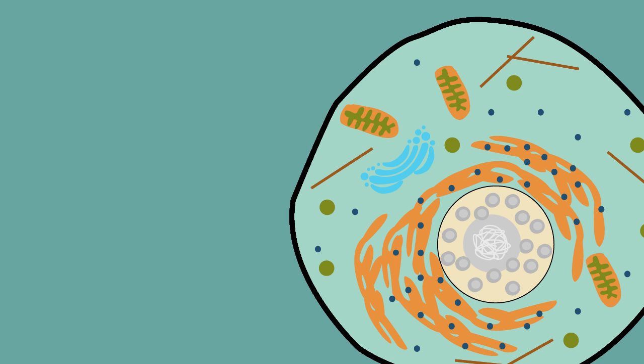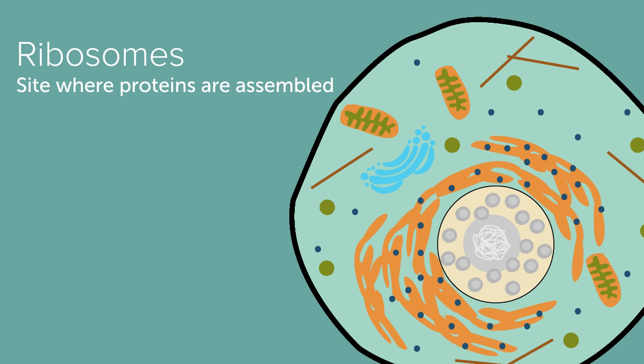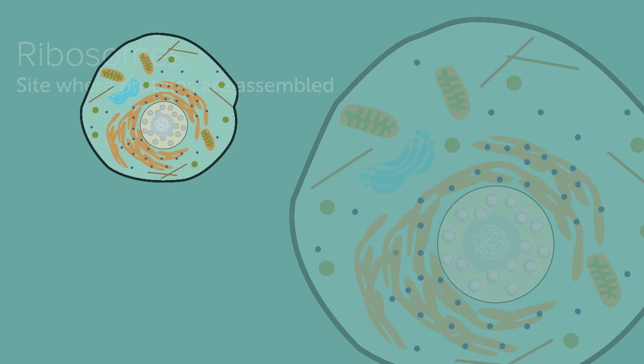Once the subunits of ribosomes are transported outside the nuclear envelope, they can be assembled. Ribosomes are very important to living things. They are the site where proteins are made. Proteins are used in the body to build structures. In the same way that lumber is used to build a house, proteins are the scaffolding of the human body.